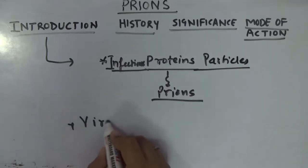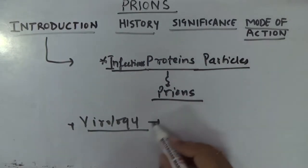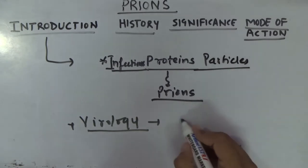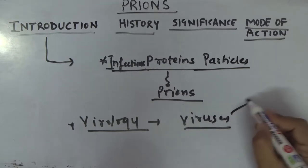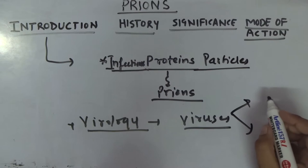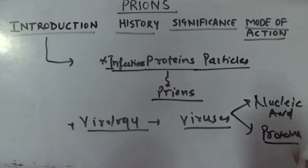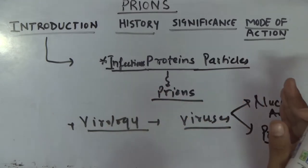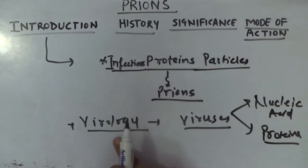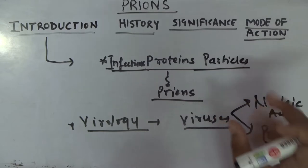Most of the time you will find that the study of prions is given under the virology section. Virology is a branch of biology which includes the study of viruses. Viruses are made up of nucleic acid and proteins — they are nucleoprotein particles. Whenever we go through any basic or general microbiology book, under the virology chapter, this topic of prions has been introduced.